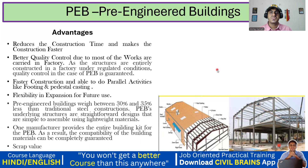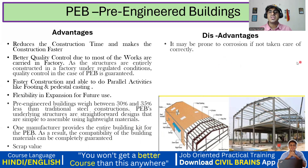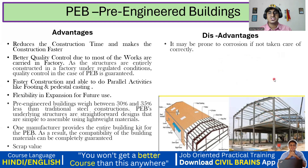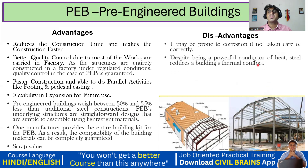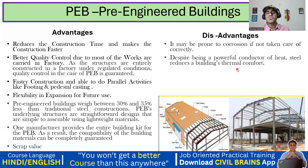Coming to the disadvantages — first, PEB may be prone to corrosion if not taken care of correctly. Since it's a steel structure, without proper maintenance and painting, there is a chance of corrosion. Second, despite steel being a powerful conductor of heat, it reduces a building's thermal comfort. Steel absorbs a good amount of heat, so occupants inside may feel excessive heat. However, with proper puff panels and ventilation, this can be managed.